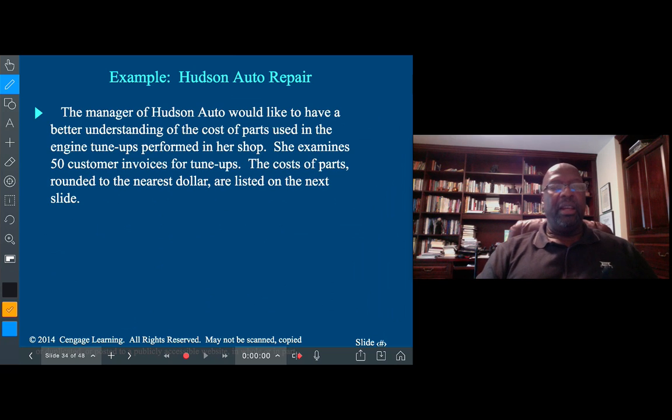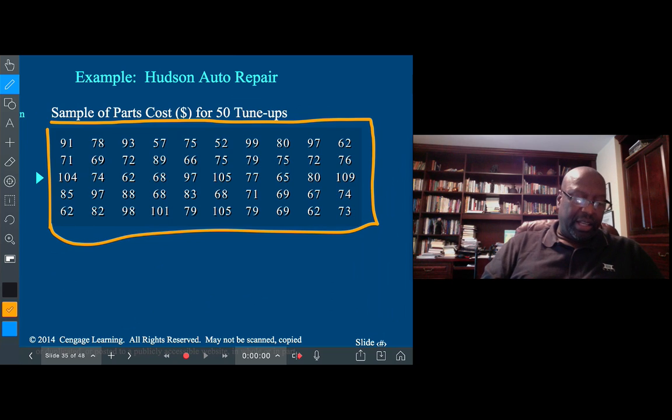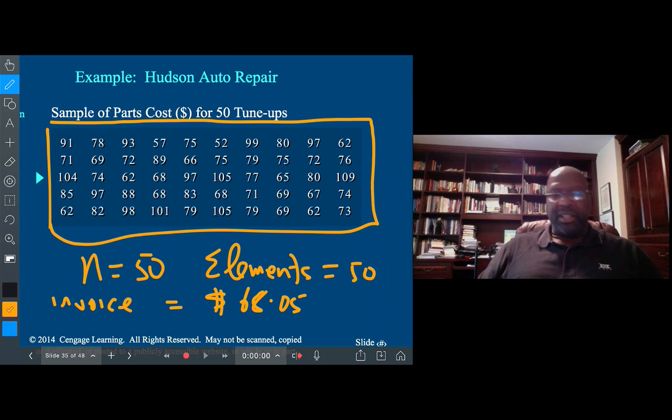So here's an example. We have the Hudson Auto Repair company. The manager of Hudson Auto Repair would like to have a better understanding of the cost of parts used in engine tuners performed in her shop. She examines 50 customer invoices for tuners, the cost of parts rounded to the nearest dollar, and are listed in the next slide. So if you look now you see we have 50 parts, so this is a case where n is equal to 50, and so therefore the number of elements is also 50. Each invoice was an element of the data, so we have 50 invoices, 50 elements, and the data set has 50 values in it.